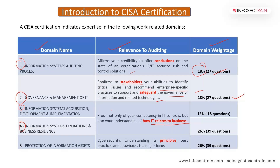Domain three is Information Systems Acquisition, Development and Implementation, with a weightage of 12% and 18 questions. Domain four is Information Systems Operations and Business Resilience, with a weightage of 26% and around 39 questions. Domain five is Protection of Information Assets, focused on understanding its principles, cybersecurity best practices and drawbacks. This domain has a weightage of 27% and 39 questions.